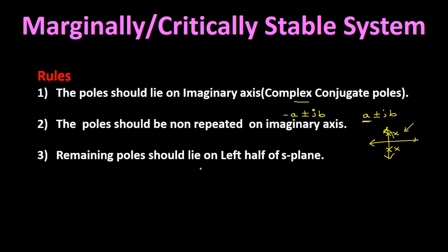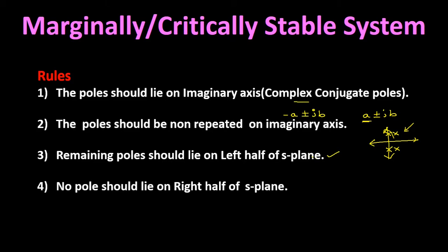The third rule is that the remaining poles of the transfer function, which are not lying on the imaginary axis, should lie in the left half of the s-plane. If remaining poles lie in the right half, the system becomes unstable. The fourth rule is that no pole should lie in the right half of the s-plane. Following these rules we can determine whether the system is marginally stable or not.